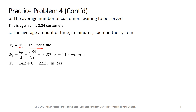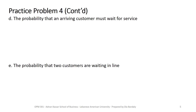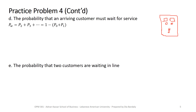Now for probability measures. Part D: the probability that an arriving customer must wait for service. With two servers, you wait if both are busy — meaning there are two or more customers already in the system. Rather than summing all those probabilities, we take the complement: 1 minus P(0) minus P(1).